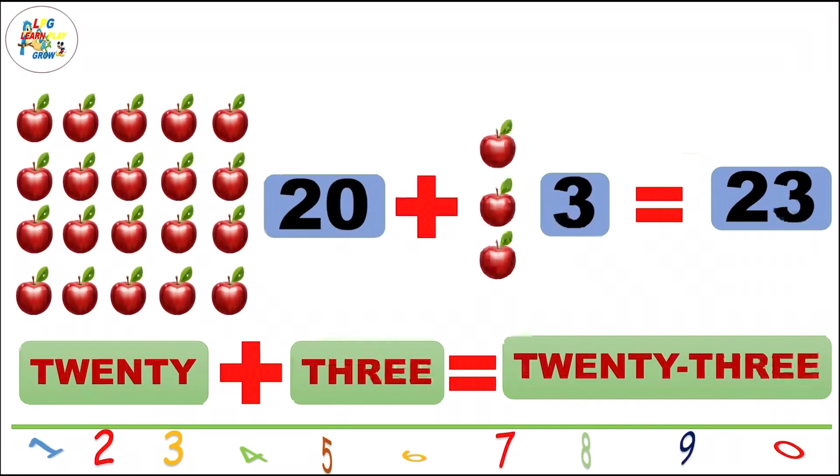20 plus 3 is equal to 23. Now, we learn the spelling of 23: T-W-E-N-T-Y, twenty, T-H-R-double E, three. Once more: T-W-E-N-T-Y, twenty, T-H-R-double E, three. 23.